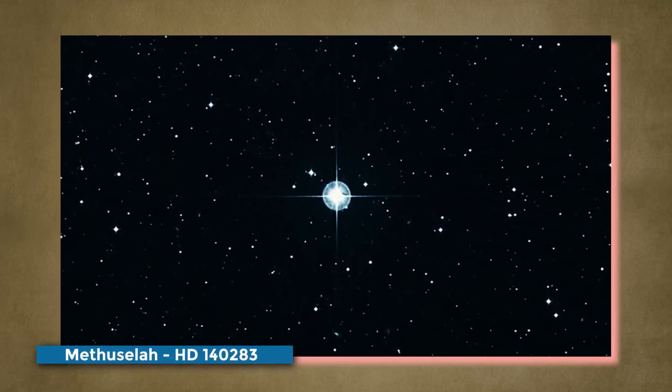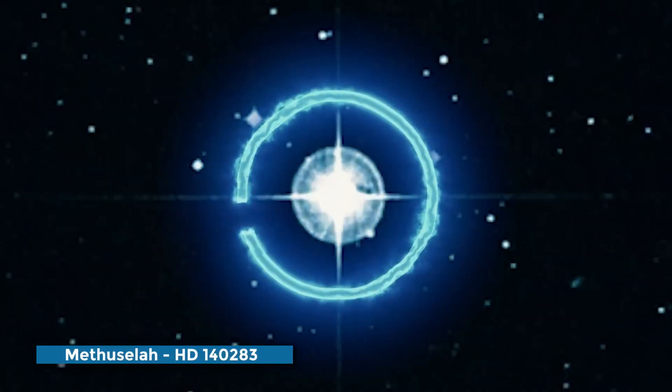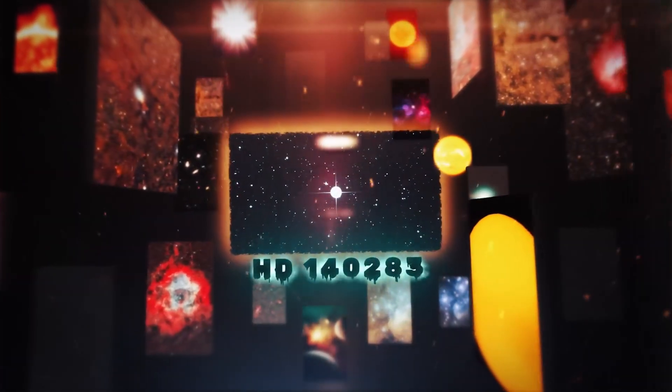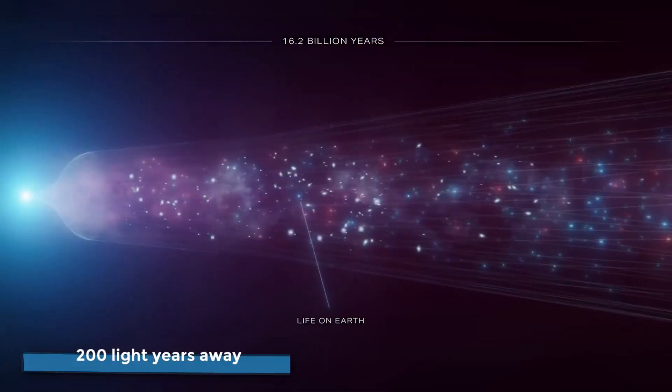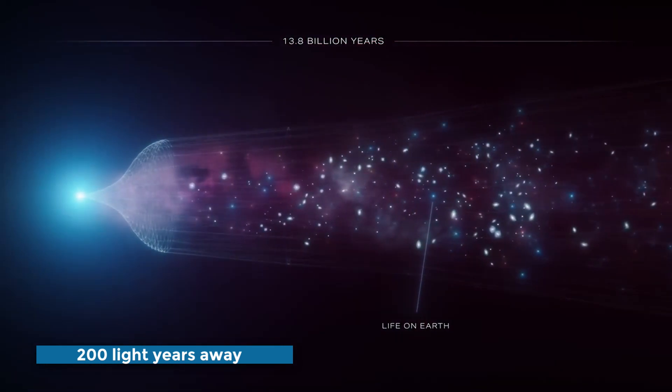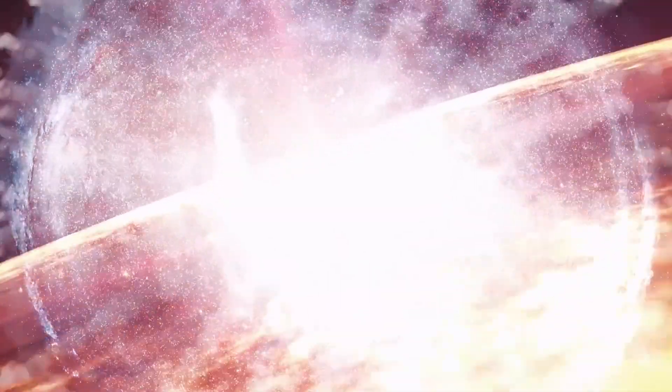Methuselah, also known as HD140283, was discovered in 2013 by astronomer Howard Bond. The name of Methuselah is inspired by a biblical figure who was known for his long life, which reflects the estimated age of the star. It is the oldest star known, about 200 light-years away from Earth, and is considered one of the most confusing stars ever.